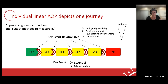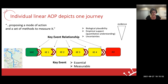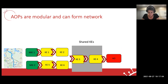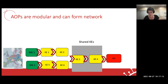At the end of the day, an AOP is intentionally a pragmatic simplification of complex biology, proposing a mode of action and a set of methods to measure it. A good analogy is that a single AOP depicts one journey — one way to go from A to B, but it doesn't represent all ways. AOPs are also modular: one key event, like hepatic stellate cell activation, is not unique to one single AOP — it can be shared by different AOPs. If two AOPs share at least one biological event, then a network occurs.